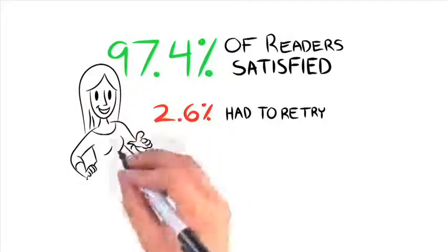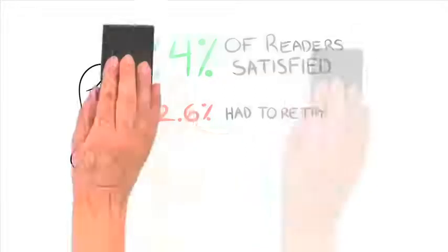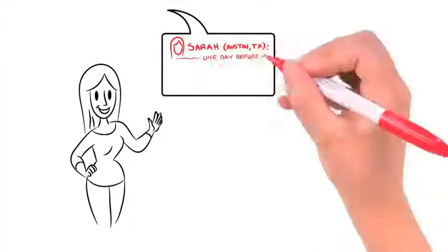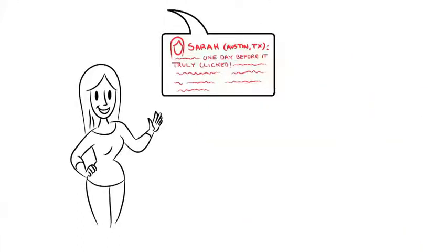Here's what parents are saying about the Start Potty training program. Sarah wrote to me from Austin, Texas to say, it took only one day before it truly clicked, and we are on our third dry day and night. People can't believe when I tell them that at 23 months he's in underwear day and night, no pull-ups, and is dry.